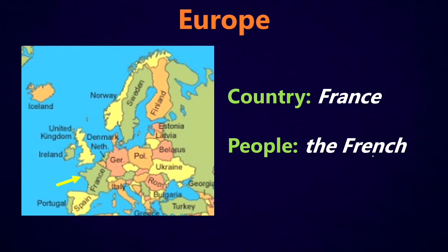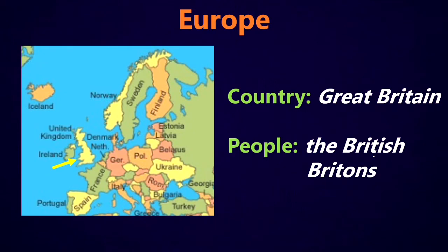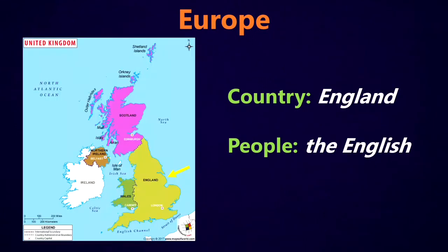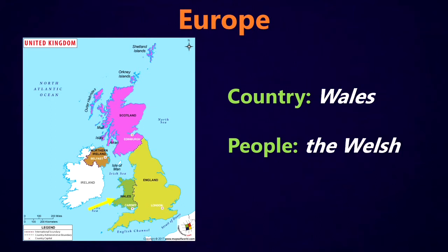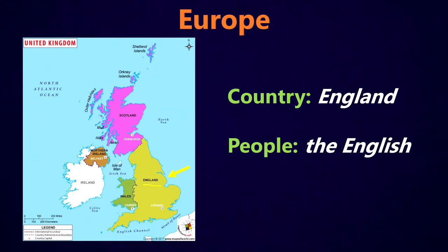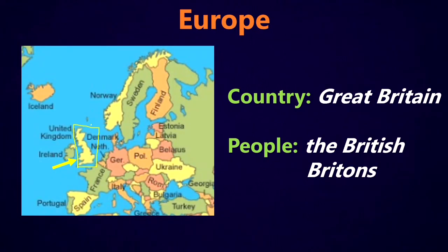In France, we have the French. In Great Britain, we have the British or Britons. Great Britain includes the whole island, but within the island of Great Britain there are actually three different parts. There's England, the main part, and the people from there we call the English. There's Scotland, and the people are the Scottish, or also called Scots. And then there's Wales, and the people are called the Welsh. Sometimes the names British and English are used like they mean the same thing, but they don't. Technically, the English are people from England, whereas the British could be anybody from the whole island.